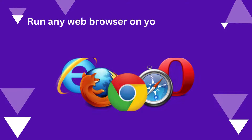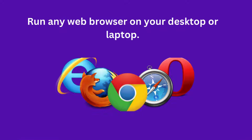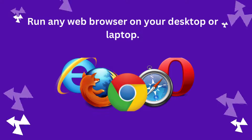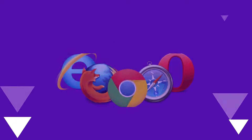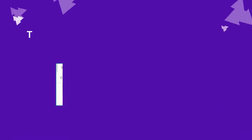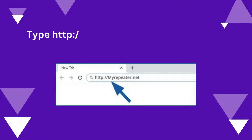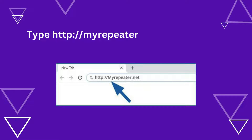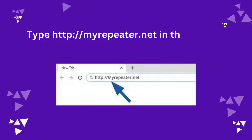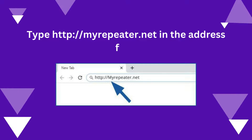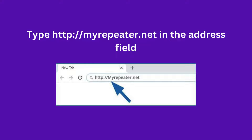Run any web browser on your desktop or laptop. Type http://mirapeter.net in the address field.